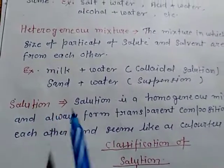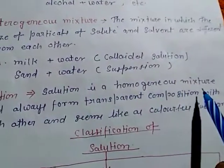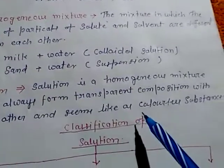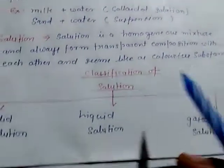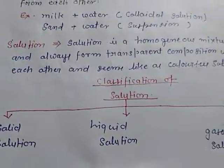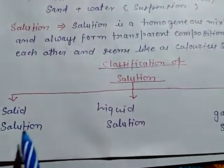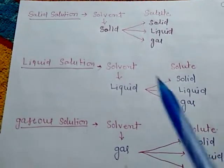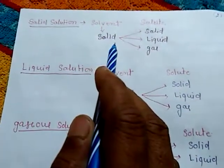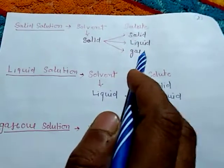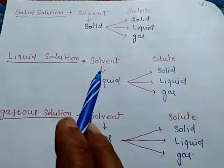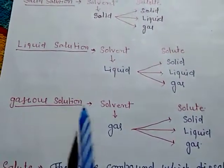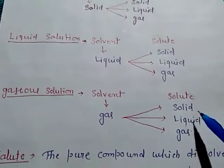A solution is a homogeneous mixture that always forms a transparent composition and appears as a colorless substance. The classification of solution depends on their combination and is of three types: solid solution, liquid solution, and gaseous solution. In solid solution, the solvent is solid and the solute may be solid, liquid, or gas. In liquid solution, the solvent is liquid and the solute may be solid, liquid, or gas. In gaseous solution, the solvent is gas and the solute may be solid, liquid, or gas.